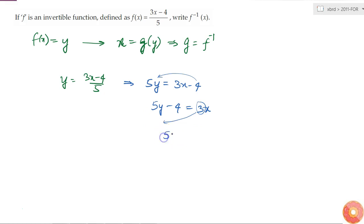So I could write x is equal to g of y. That is, if g of y is equal to (5y minus 4)/3, then I have converted f(x) equal to y to the form x is equal to g of y.